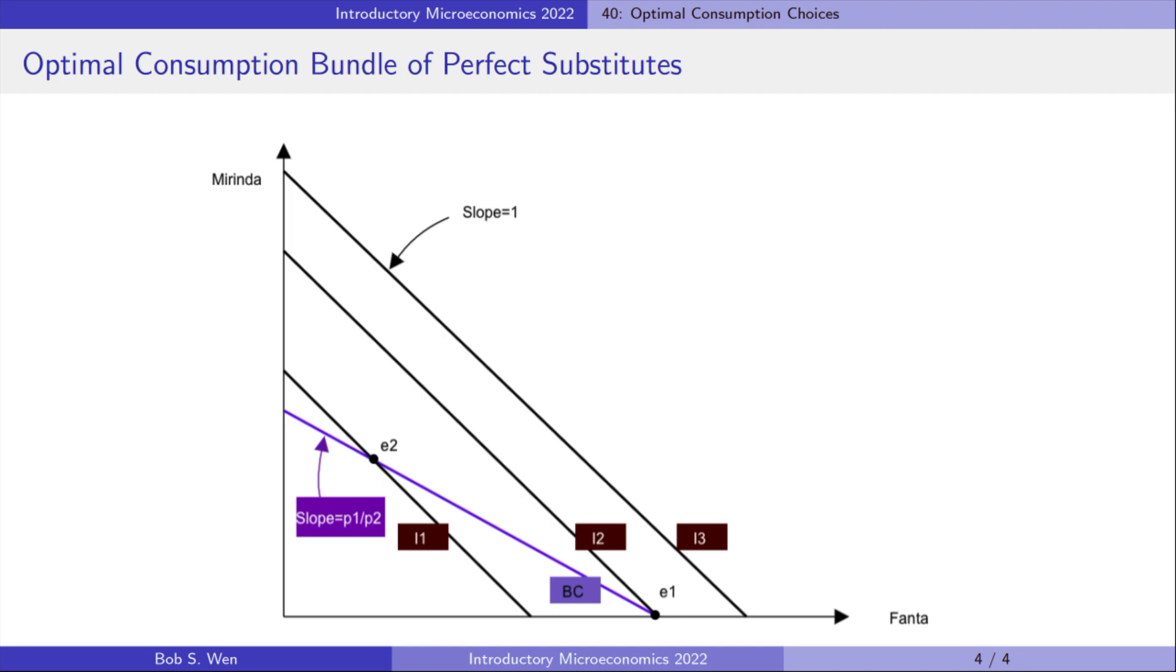If Fanta and Marinda have the same price, both her budget line and indifference curves have the same slope 1. So one of her indifference curves lies on top of the budget line. She is willing to buy any bundle on that budget line in the interior or at either corner.